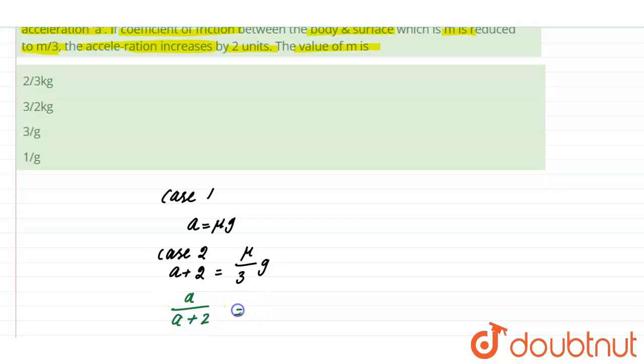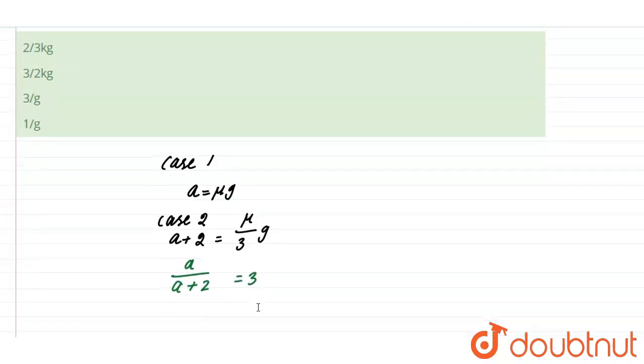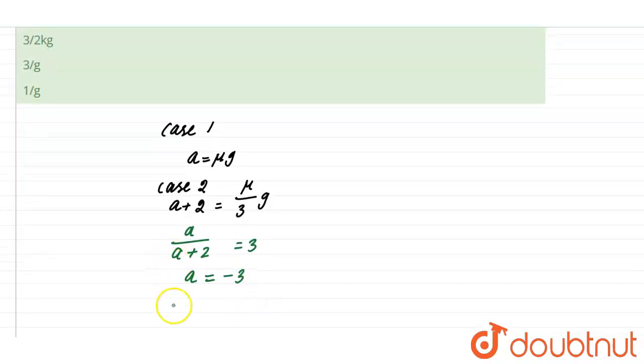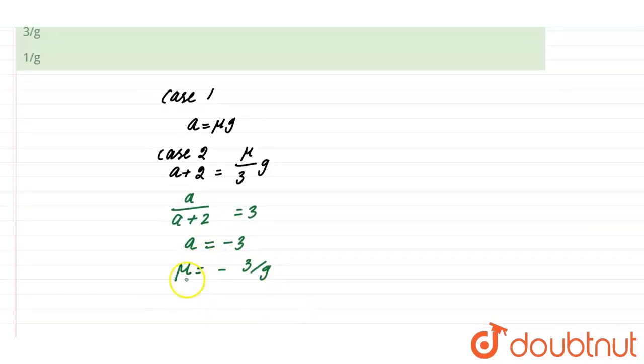mu equal to minus 3. From the equation we have mu equal to minus 3 by g. Considering only magnitude, therefore mu equal to 3 by g.